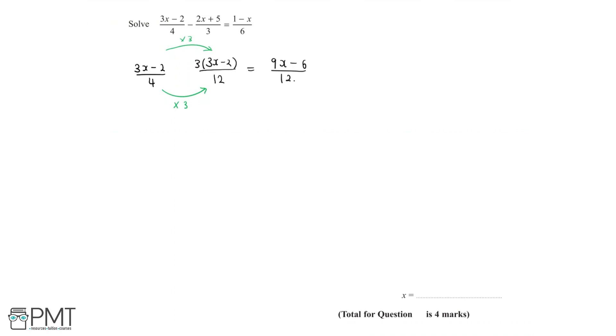Now let's move on to the second fraction. We have 2x plus 5 all divided by 3. To get the common denominator of 12, we need to multiply both the numerator and the denominator by 4. So 2x plus 5 multiplied by 4 will give 4 brackets 2x plus 5, which we can then expand to get 8x plus 20 over 12.